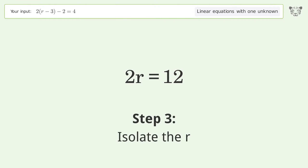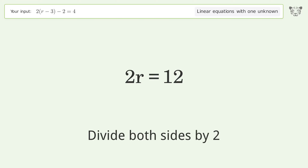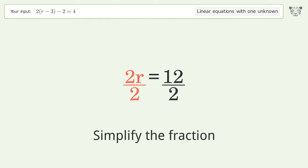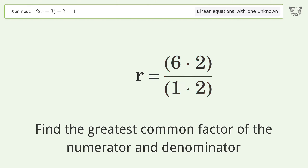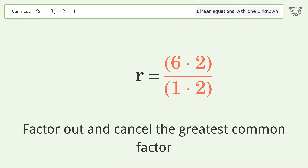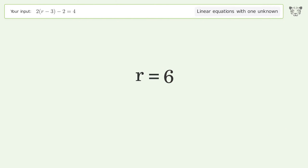Isolate the r: divide both sides by two. Simplify the fraction — find the greatest common factor of the numerator and denominator, then factor out and cancel the greatest common factor. And so the final result is r equals six.